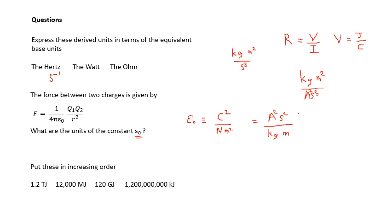And we've got second squared on the top again, kilogram meters per second squared over meter squared. So that's meters cubed. So that is an amp squared seconds to the four, kilograms per meter cubed. Wow.